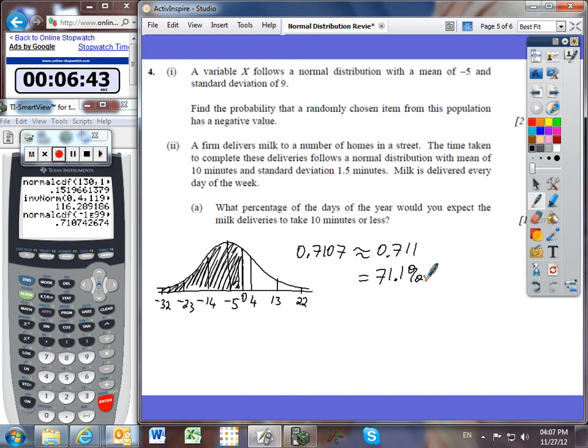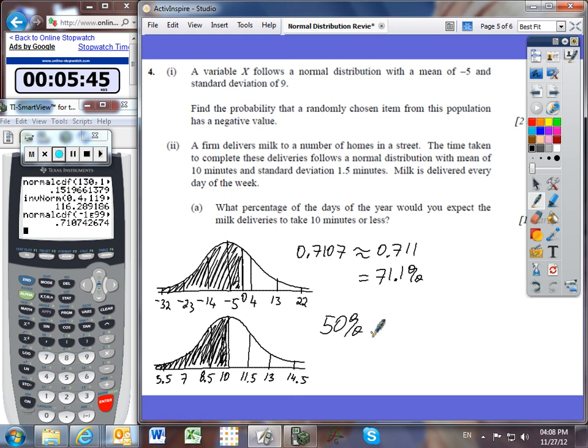Part double I. A firm delivers milk to a number of homes in a street. The time taken to complete these deliveries follows a normal distribution with a mean of 10 minutes, and a standard deviation of 1.5 minutes. I'm just going to draw a quick diagram of this situation. And so our mean is 10 minutes, and our standard deviation is going up by 1.5 each time. And the same in the other direction, increments of 1.5. It says, what percentage of the days of the year would you expect the milk deliveries to take 10 minutes or less? So 10 minutes or less, we notice that we've ended up shading exactly half of the normal distribution. So straight away, we know that that is 50% of all of the days.